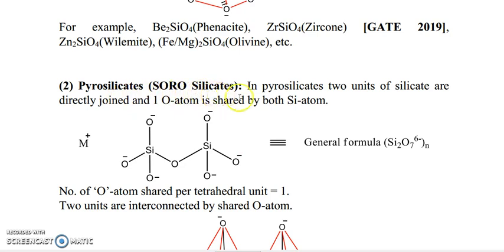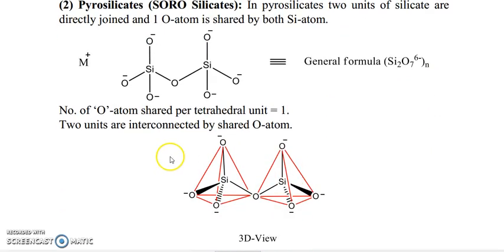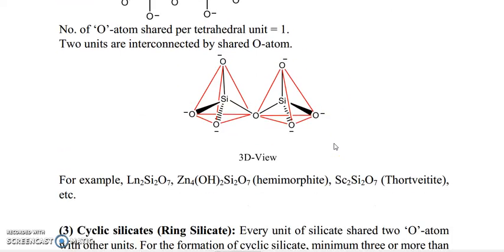Next type: pyrosilicate, also known as sorosilicate. In pyrosilicate, two silicate units are directly joined and one oxygen atom is shared by both silicon atoms. One oxygen atom is shared by both silicon atoms, and two units of silicate are joined by that one oxygen atom. The general formula for pyrosilicate is Si₂O₇⁶⁻ N, with six negative charges total. The number of oxygen atoms shared per tetrahedral unit equals one. For example: In₂Si₂O₇, Zn₄(OH)₂Si₂O₇ (hemimorphite), and Sc₂Si₂O₇ (thortveitite) are examples of pyrosilicate.